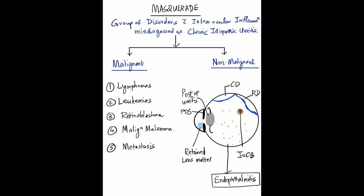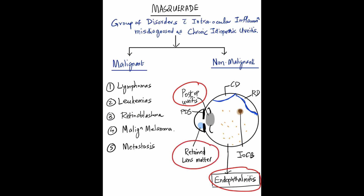So what is masquerade syndrome? Basically, masquerade refers to a group of disorders with intraocular inflammation misdiagnosed as chronic idiopathic uveitis. It can be malignant or non-malignant. Non-malignant conditions to consider include endophthalmitis — most importantly endogenous or post-operative endophthalmitis. A post-op patient presenting with vitreitis inflammation can be misdiagnosed. Retained lens matter, choroidal detachment, retinal detachment, intraocular foreign body, and pigment dispersion syndrome can all mimic uveitis. These are non-malignant conditions that can masquerade as idiopathic uveitis for a long time.